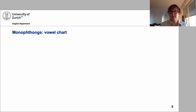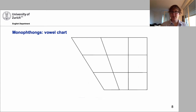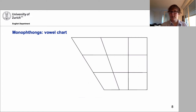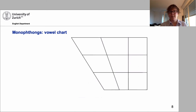We start with the monophthongs — simple vowels — and then come to the diphthongs, which are more complex. Here's the vowel chart for English. For English it is enough to have a three-by-three grid to describe the vowels exhaustively. Other languages such as German would need a four-by-three dimension, and some languages have a relatively simple vowel system requiring only a three-by-two grid or even less.